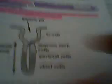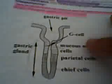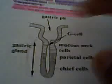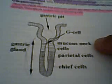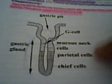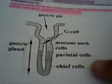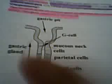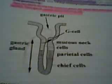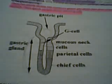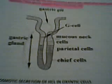Here we observe the gastric pits, the G cells, the mucus cells, the mucus neck cells, the parietal cells, the chief cells, as well as the gastric gland. One thing we need to remember about these is the gastric secretions.